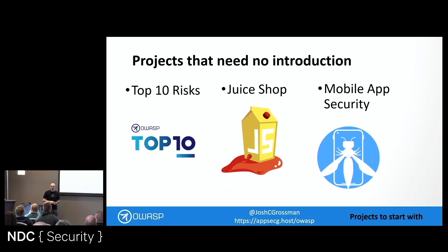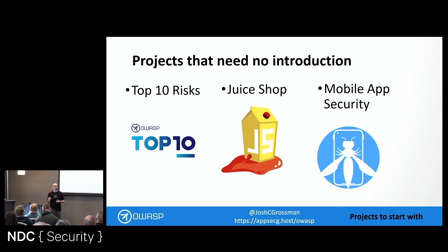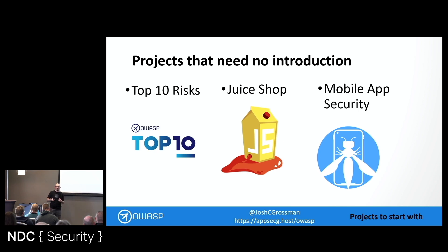Here are three that don't need any introduction. The OWASP Top 10 risks — if anyone has heard of OWASP, they've heard of that. OWASP Juice Shop — if you saw Bjorn's talk earlier about Juice Shop, he's probably still around if you want to chat to him, and there are loads of resources on the internet. It's a great vulnerable application. And finally, for mobile security, there's a project dedicated to mobile app security with a variety of sub-projects within that — very well-documented and well-known, so I don't want to go into too much detail.